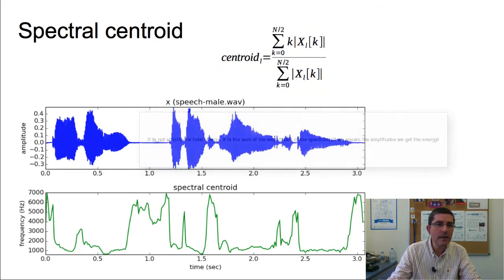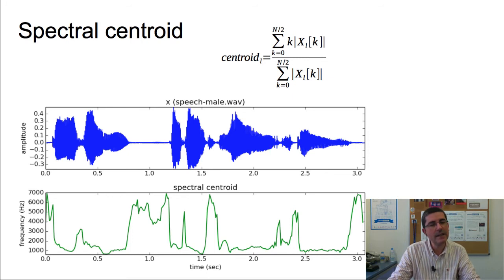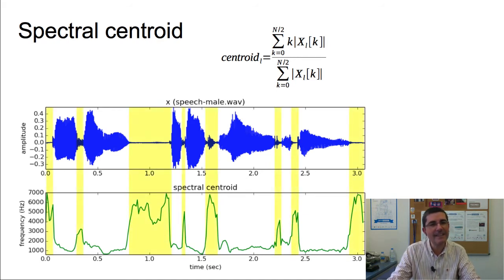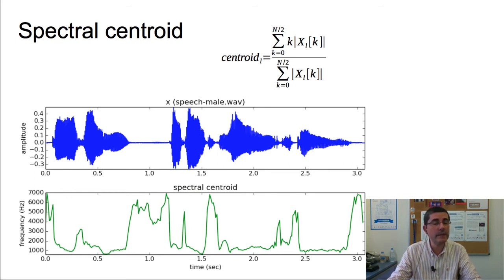We can see how, as the sound varies in time, the brightness changes. This is the sound of a male speech we have heard before. Below the waveform, we see the spectral centroid — its values are frequencies representing the center mass of the spectrum as it changes in time. This speech sound varies between roughly 1000 Hz and 7000 Hz. The noisy and silent parts have a high centroid, while the voiced parts have a much lower centroid — making this a good measure for characterizing the brightness of a sound.